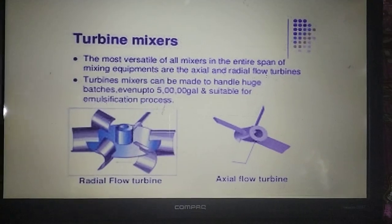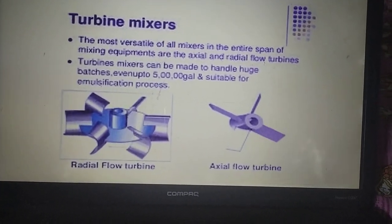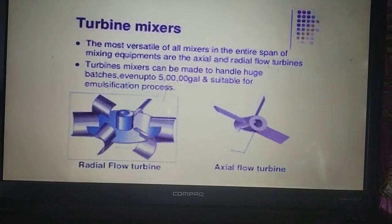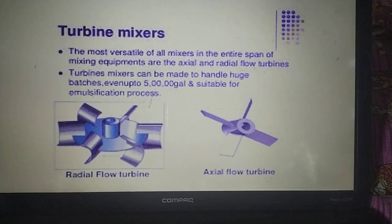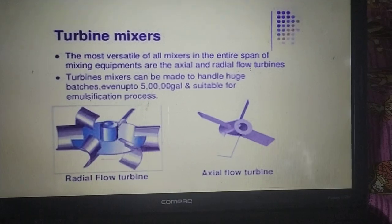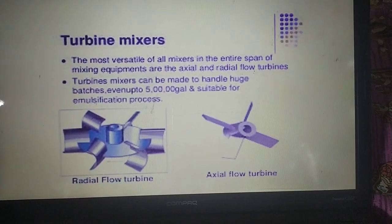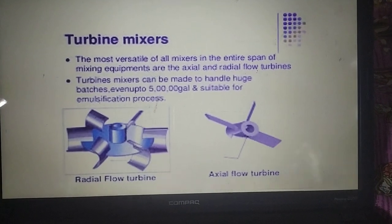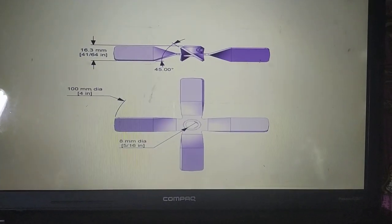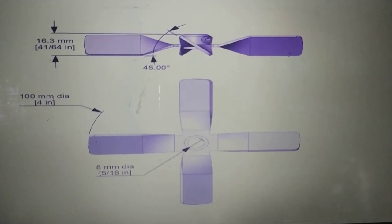Turbine mixers have four blades, and with four blades you get uniform rotational mixing in both axial and radial flow. The media moves upwards as well as downwards from the blade, making mixing of media and cells more efficient in turbine mixers.